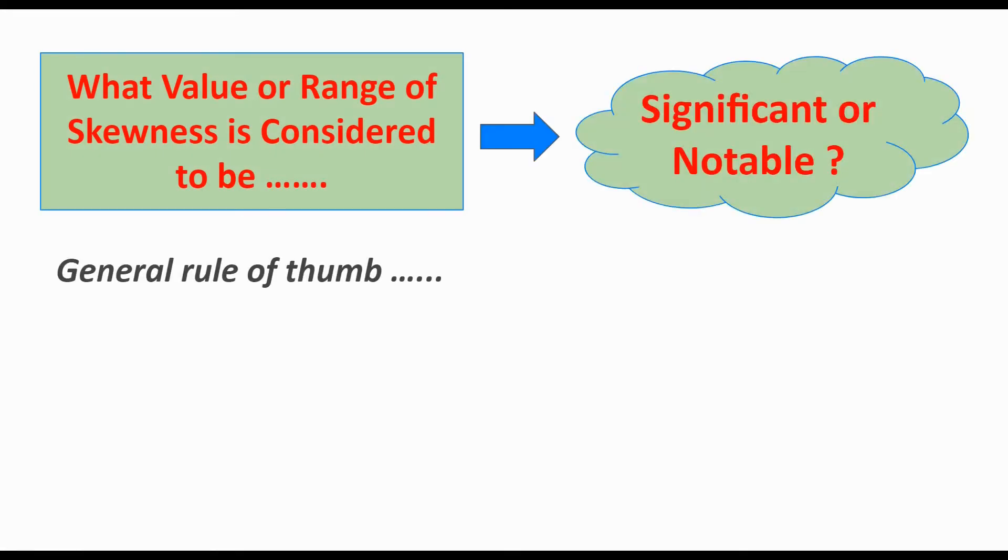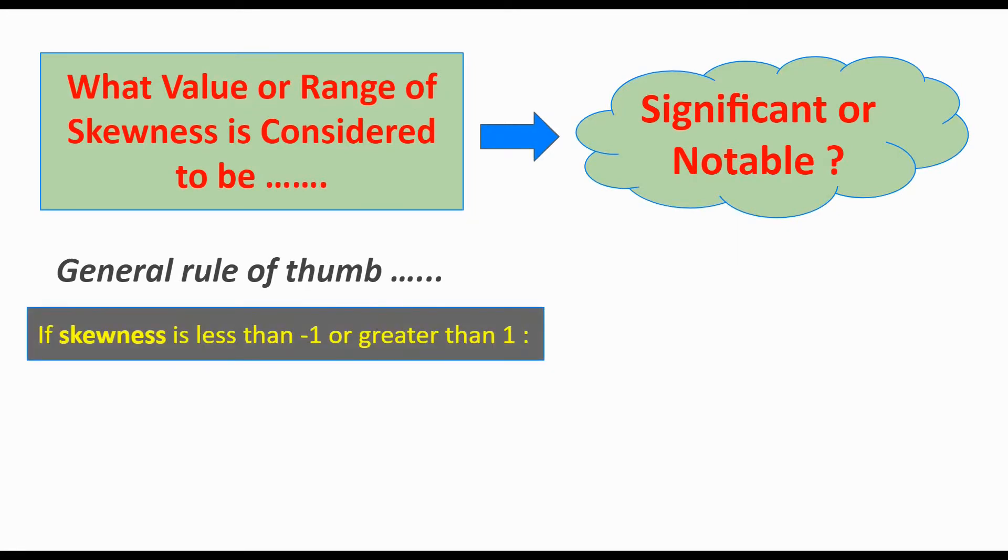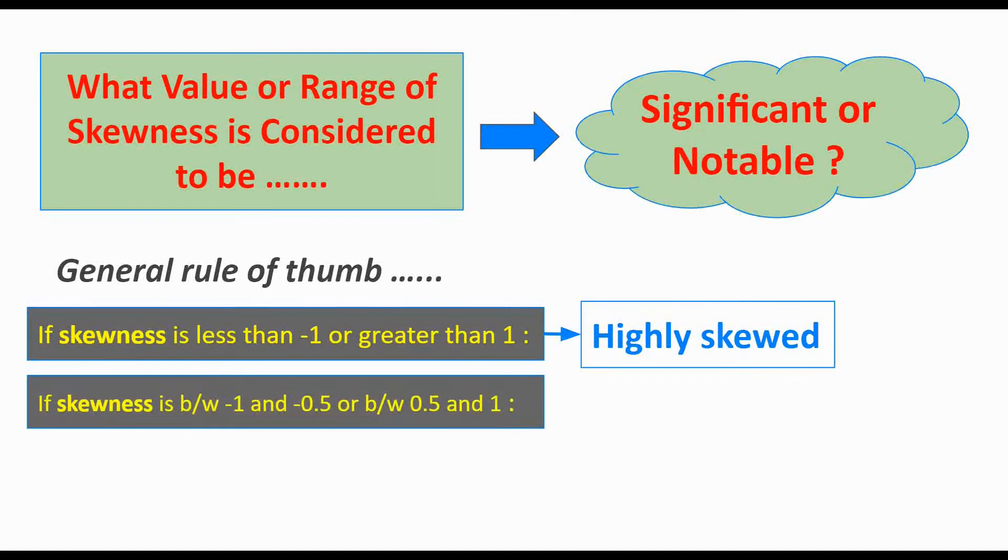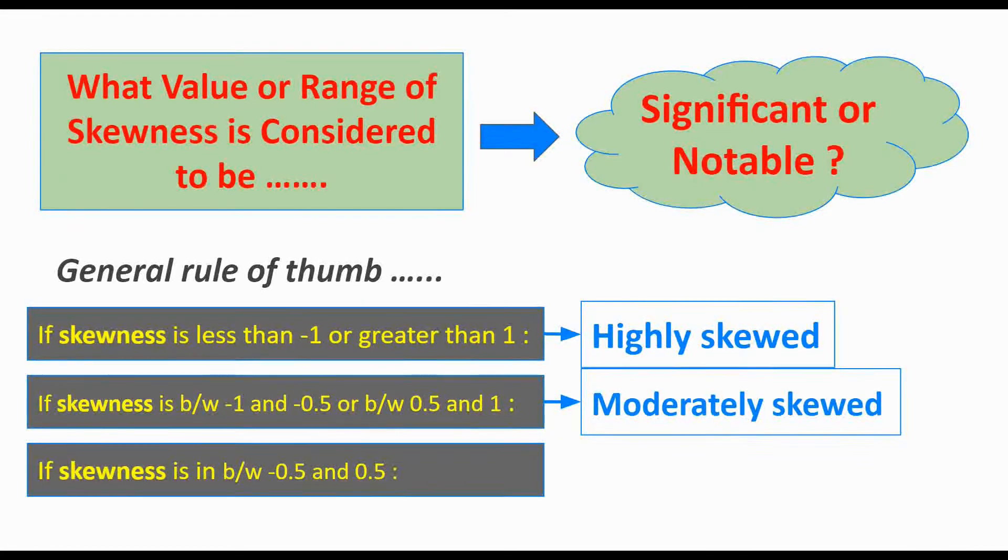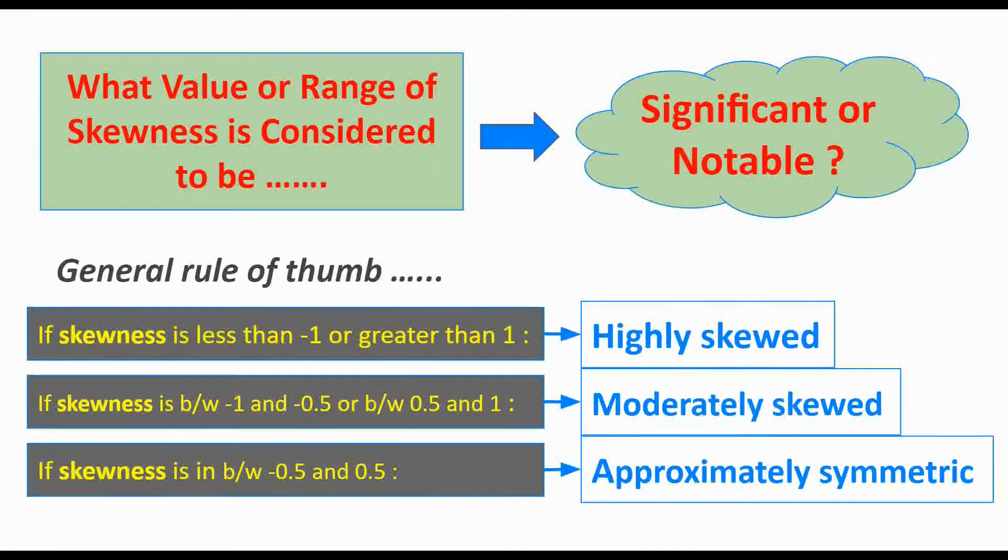So going forward, what value or range of skewness is considered to be significant or notable? Here we have a general rule of thumb. If skewness is less than minus 1 or greater than 1, we say it's highly skewed distribution. If it's between minus 1 and minus 0.5, or between 0.5 and 1, we say it's moderately skewed. And if it's between minus 0.5 to 0.5, we say it's approximately symmetric, more or less close to normal distribution.